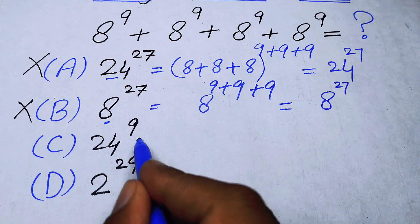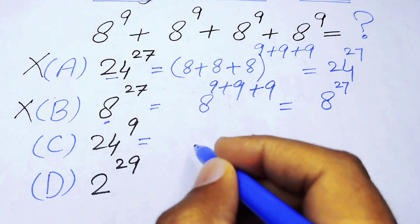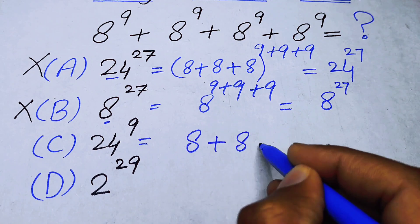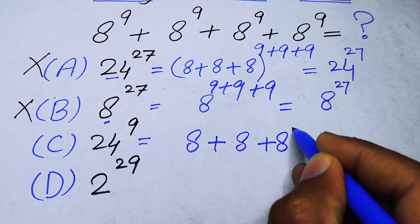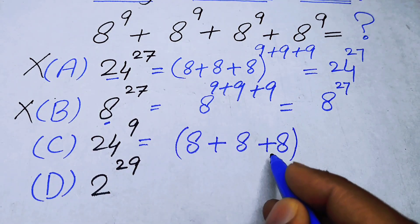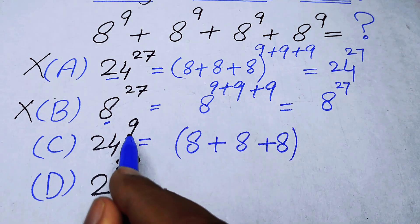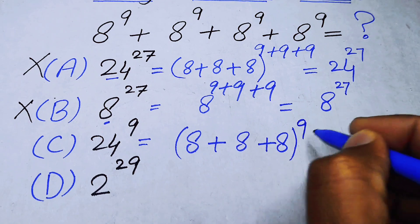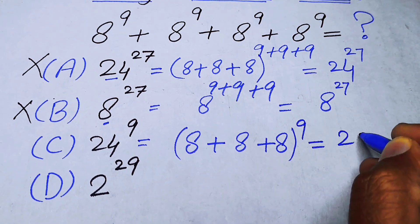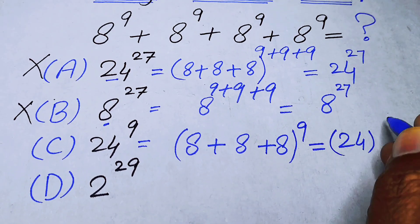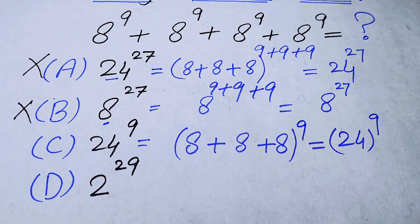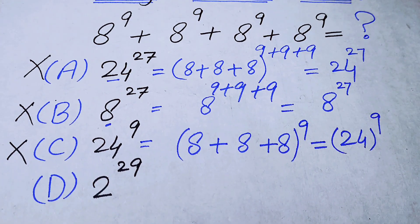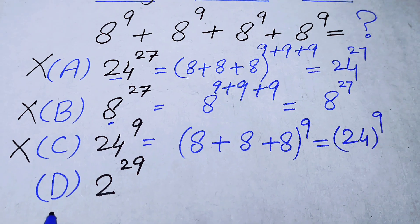Moving to option C, we have 24 to the power of 9. We can write 24 as 8 plus 8 plus 8, and the exponent is 9. So this gives 24 to the power of 9, but again it is the wrong answer.